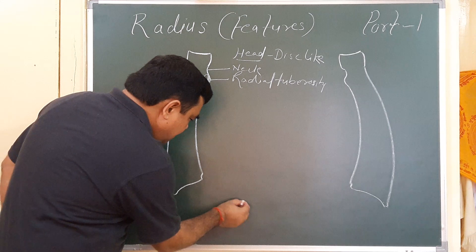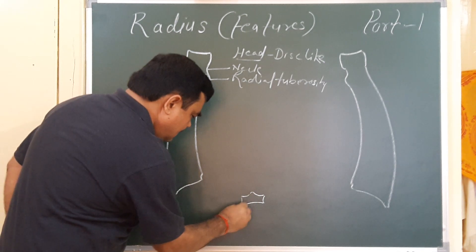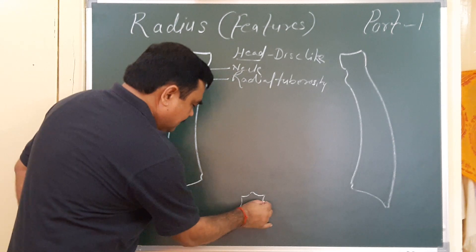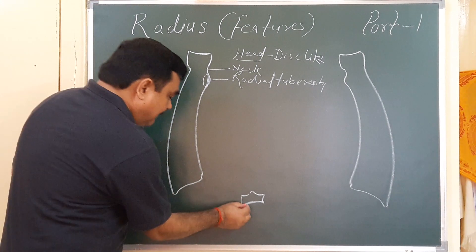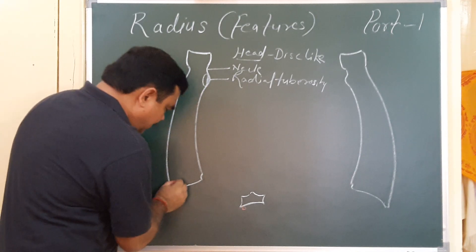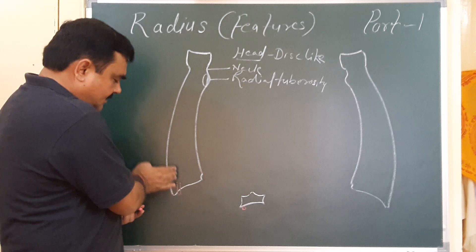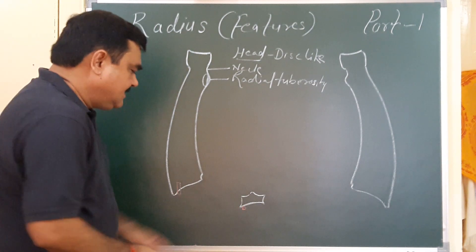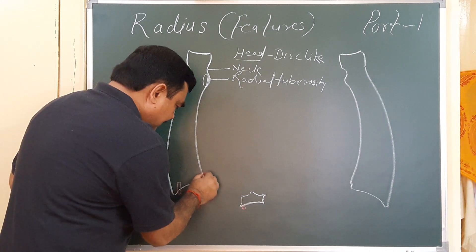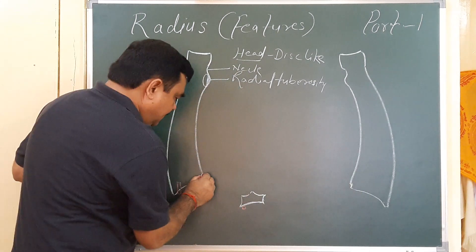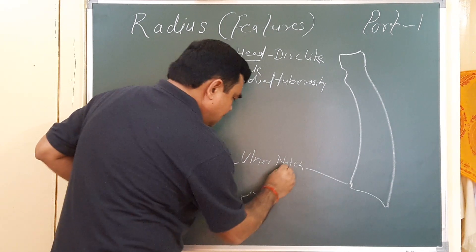Now the lower end. The lower end has five surfaces. The anterior surface is prominent — the radial artery is palpated here, as it lies anterior to this surface and is palpated against the radius. This is the anterior surface. Here is the medial surface, which forms the ulnar notch.